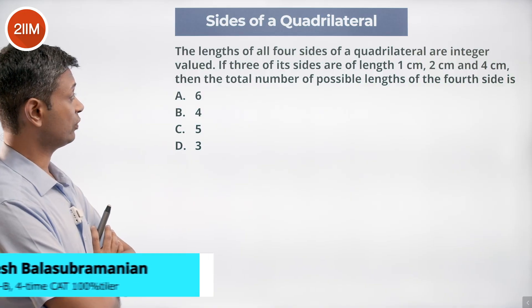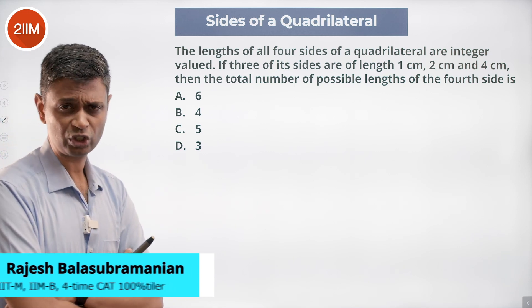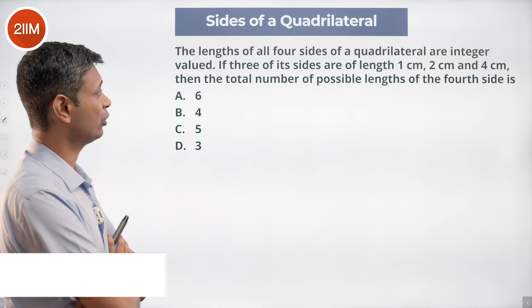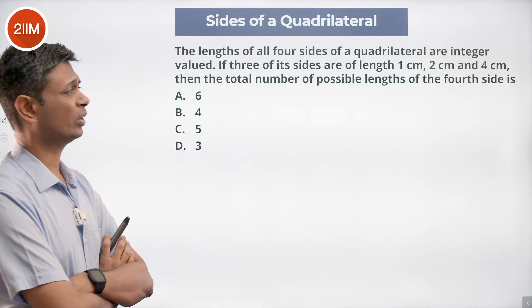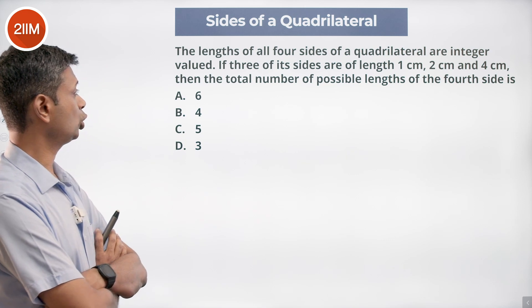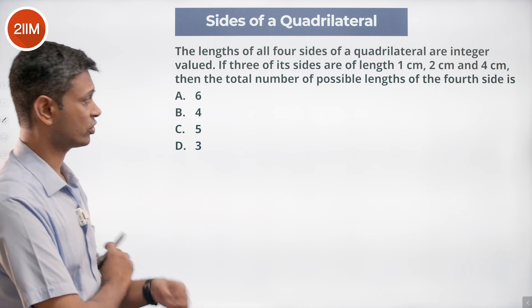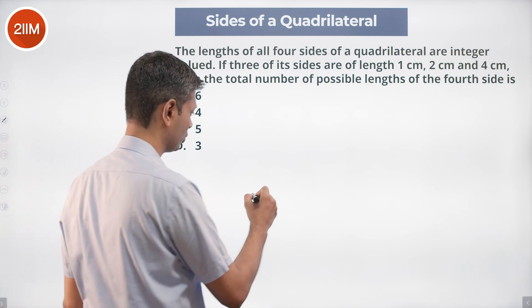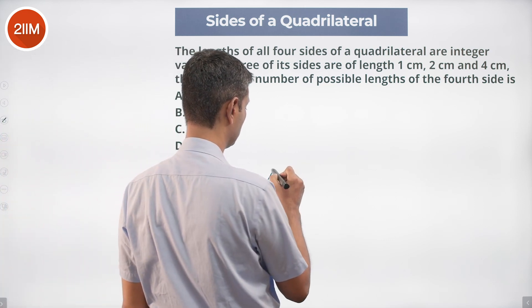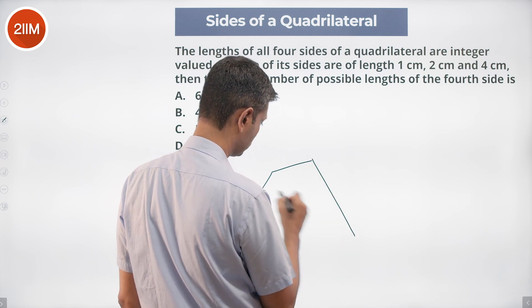The lengths of all four sides of a quadrilateral are integer-valued. If three of its sides are valued at 1, 2, and 4, then the total number of possible lengths of the fourth side is to be found. The three known sides are 1, 2, and 4.